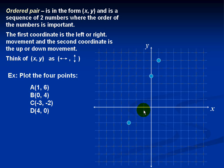And finally, for our last point D, once again we return to the origin. The X coordinate is positive 4, so we move 4 places to the right. The Y coordinate is 0, so we don't move up or down — we stay on the X axis.